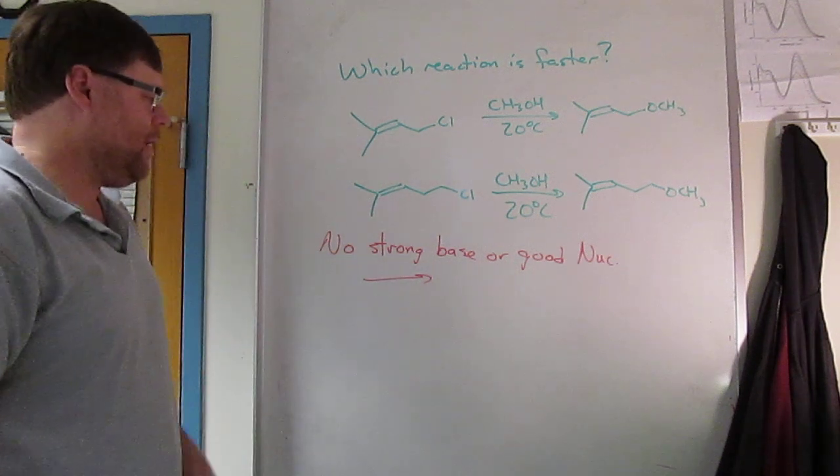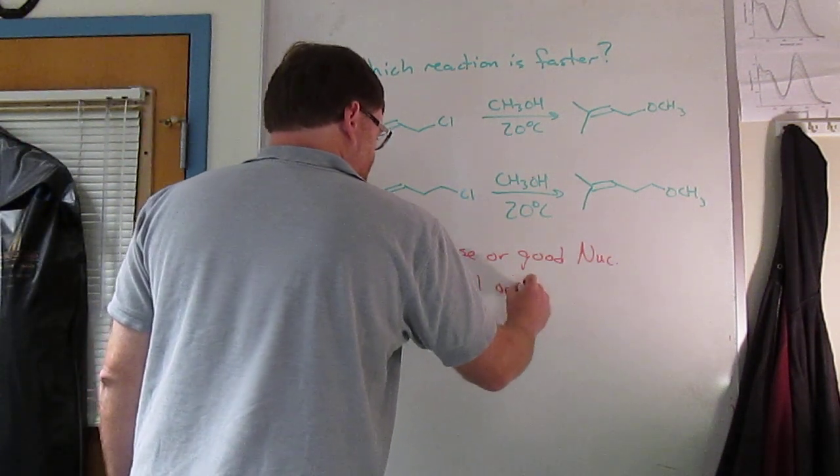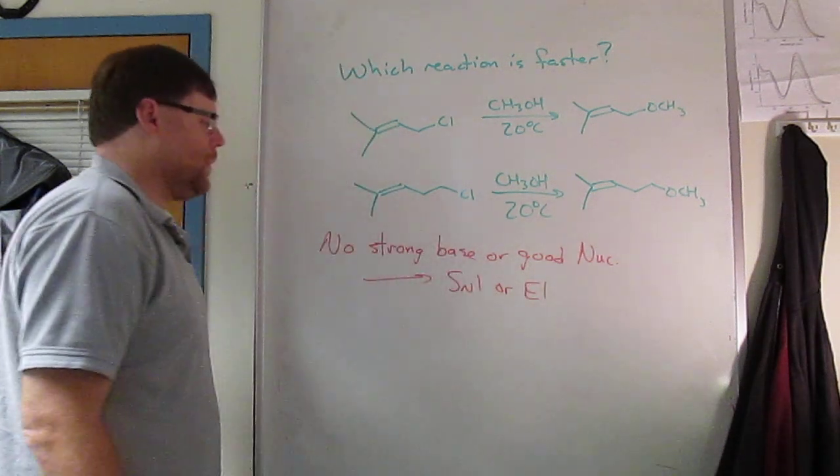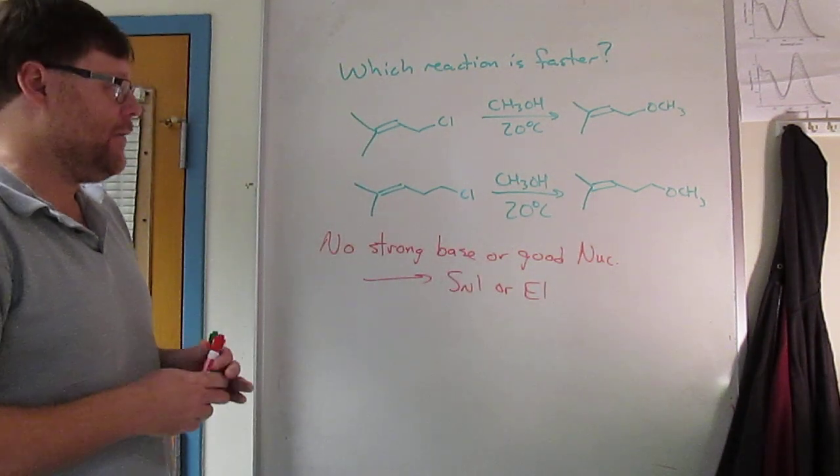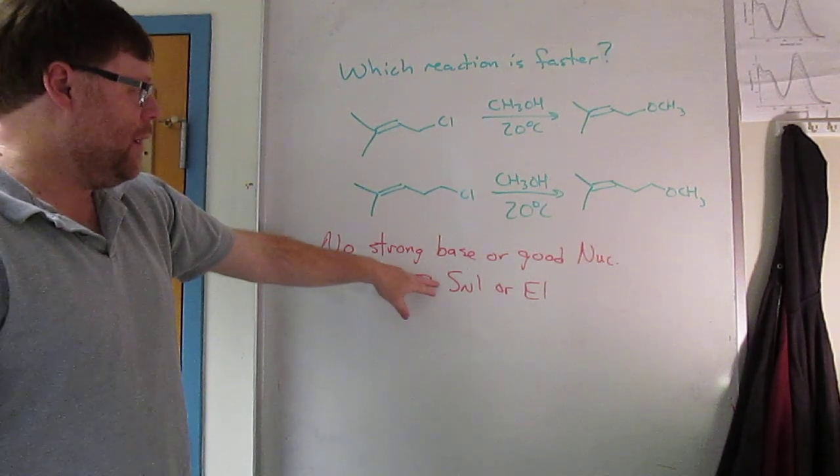There's no strong base, there's no strong nucleophile. Therefore, no strong base or good nucleophile - this is going to suggest an SN1 or E1 reaction. Look at that flow chart I gave you in class. So now you figured out that it's either SN1 or E1.